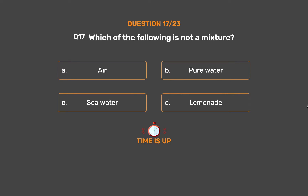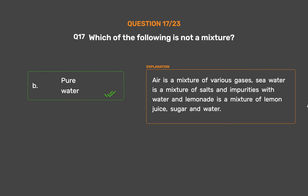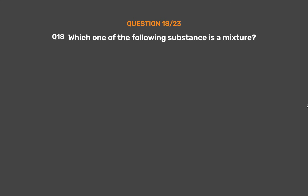The correct answer is Option B: Pure water. Air is a mixture of various gases. Sea water is a mixture of salts and impurities with water, and lemonade is a mixture of lemon juice, sugar, and water.